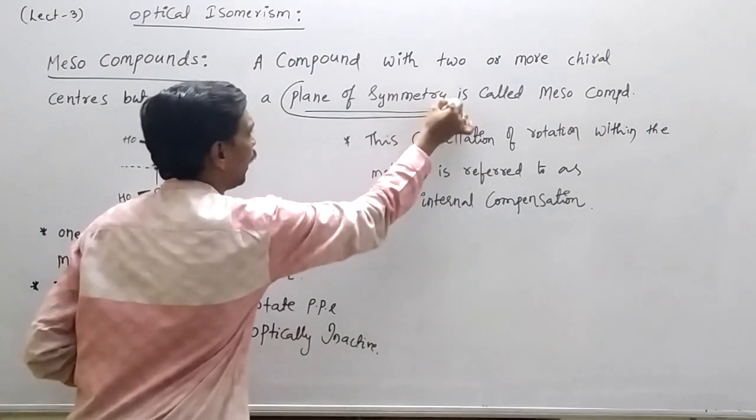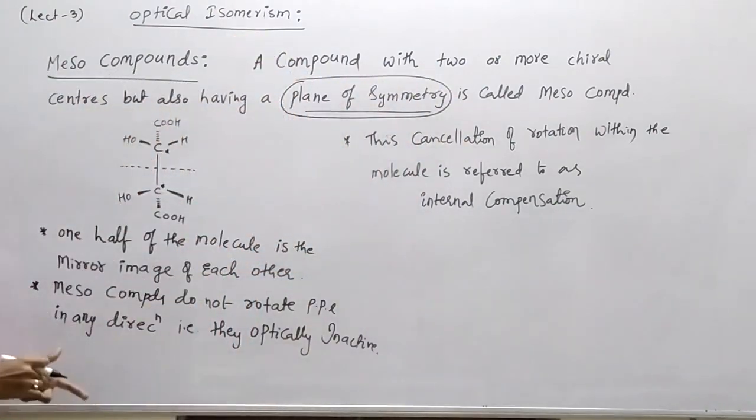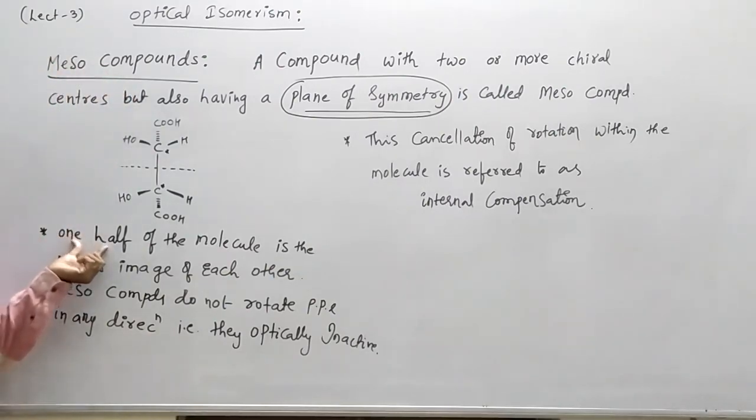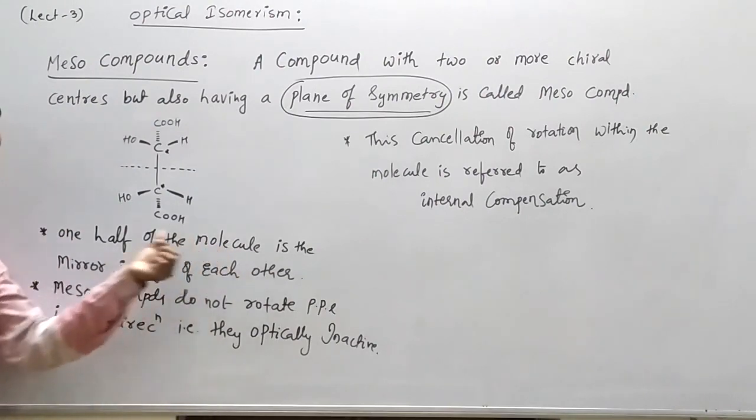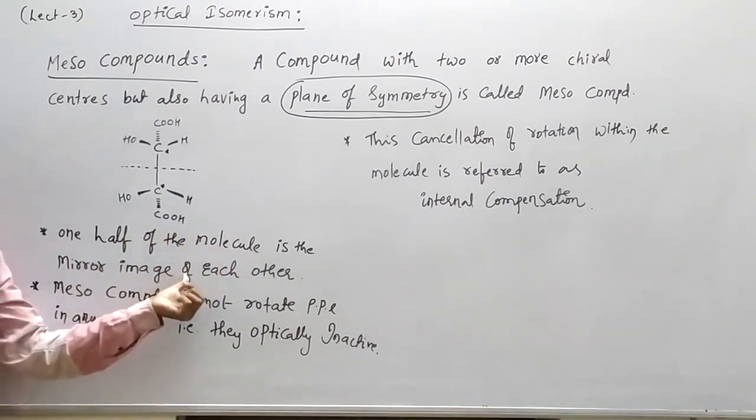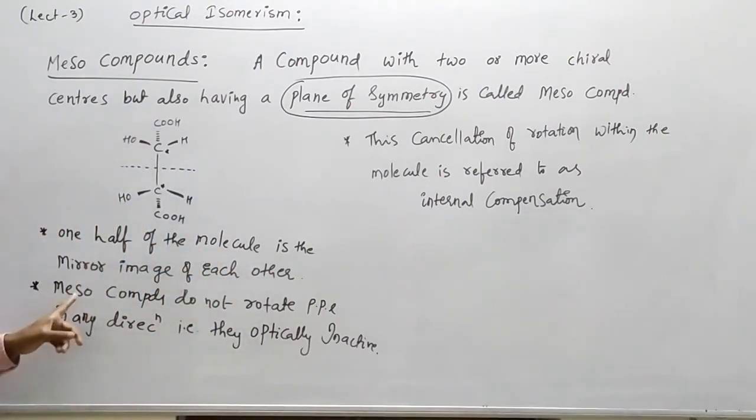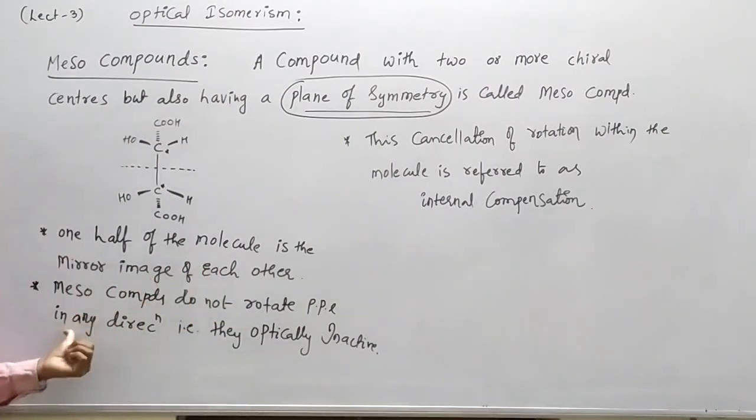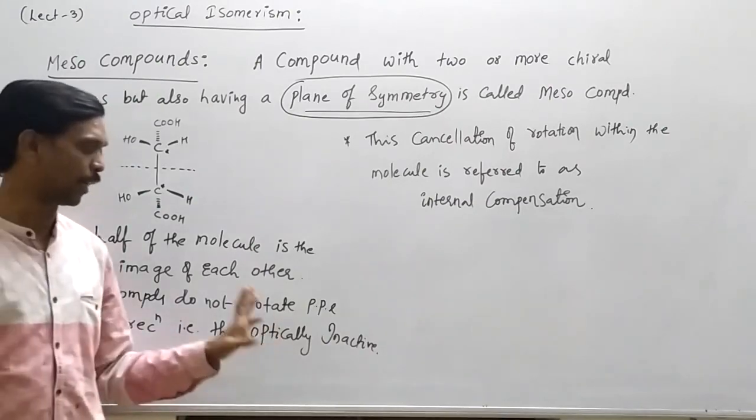When it is a plane of symmetry, the compound is 100% meso compound. One half of the molecule is the mirror image of each other. And meso compounds do not rotate plane polarized light in any direction.